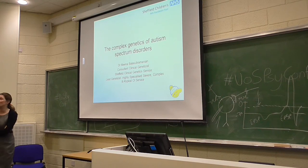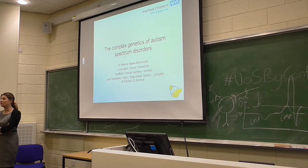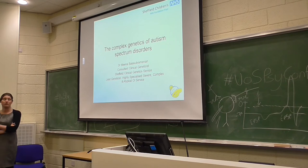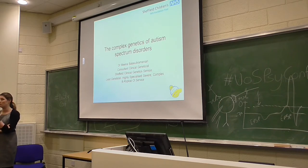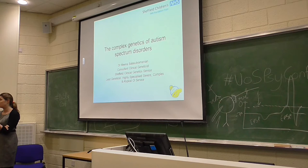Hi everybody, thank you very much for coming. It's my pleasure today to introduce Dr. Meena Falasabramanian, who is going to do our talk today on autism — specifically the genetics of autism. Meena is a consultant clinical geneticist at the Children's Hospital. She works with a lot of paediatric genetic cases, and autism is quite common within that. I'm really excited to hear about the latest research findings in terms of the genetics of autism.